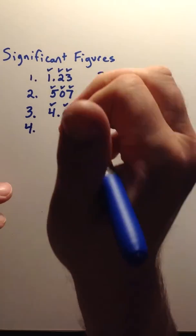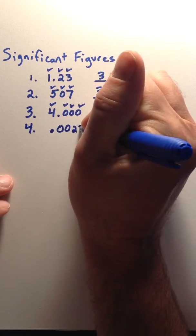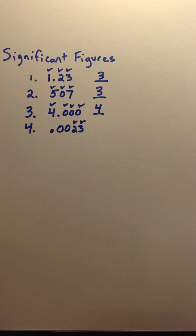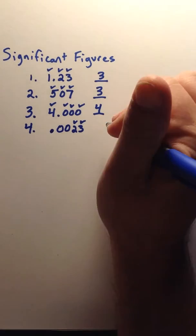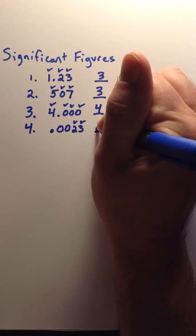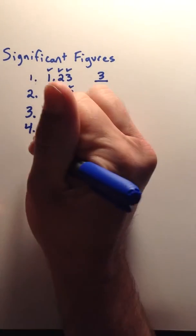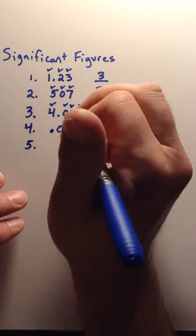Now you have two sandwich zeros in between for a total of four significant figures. The fourth type is something called a placeholder zero. So if you have a .0023, the 2 and the 3 are significant non-zero numbers. But the two zeros are just placeholders. So you only have two significant figures in that number.